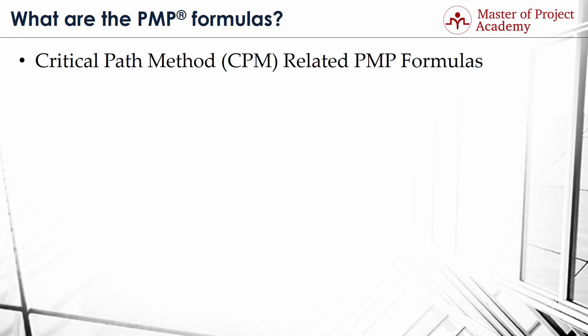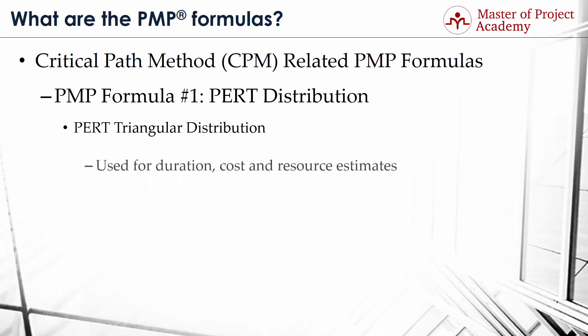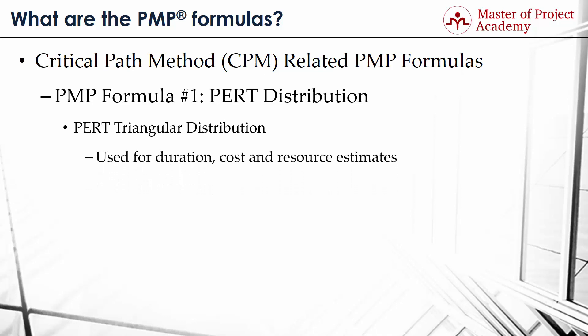The first set of PMP formulas are related to the Critical Path Method. PMP formula number one: PERT Distribution. There are two types of PERT distribution — triangular and beta. The PERT Triangular Distribution is one of the most important PMP formulas, and we use it to calculate duration, cost, and resource estimates. To calculate Estimated Activity Duration or EAD, you need to determine the activity Optimistic (O), Most Likely (M), and Pessimistic (P) estimates first.